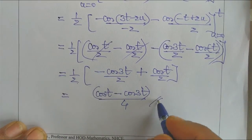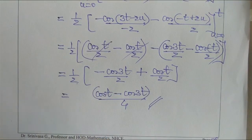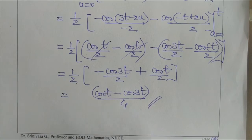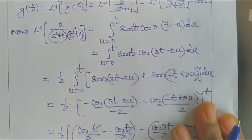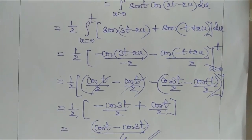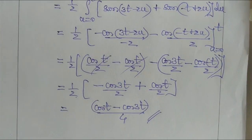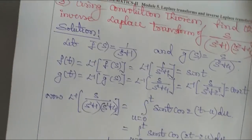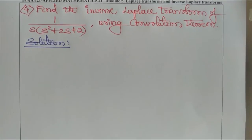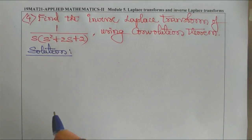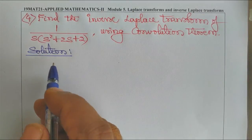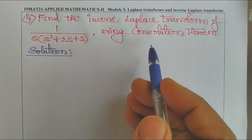So the solution using the convolution theorem is (cos T − cos 3T)/4. Next problem: find the inverse Laplace transform of 1/[S(S² + 2S + 2)] using the convolution theorem.